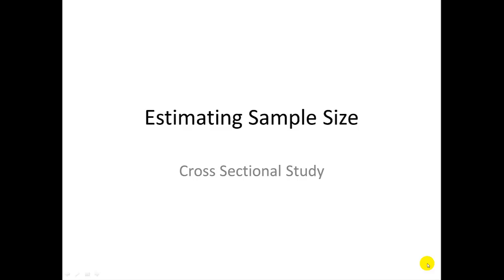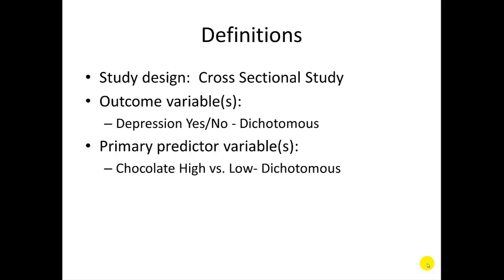This is a brief tutorial on how to estimate sample size for Module 1. I will use the example study on chocolate intake and depression for this tutorial. As a reminder, we are estimating sample size for a cross-sectional study. Our outcome variable will be depression, yes or no. Our primary predictor variable will be chocolate high intake versus low intake. Both of these variables have just two levels, therefore both are considered dichotomous.